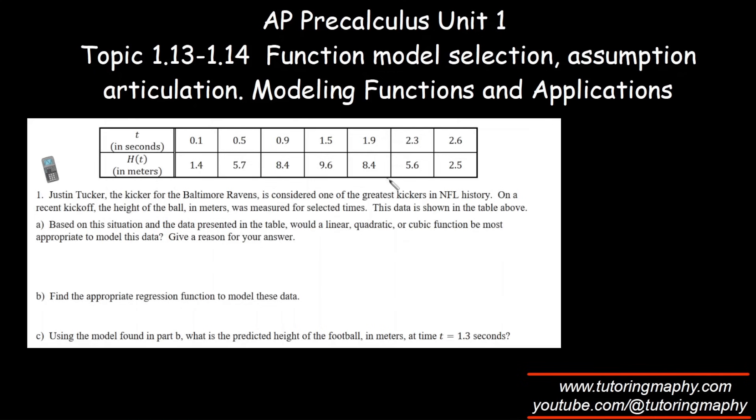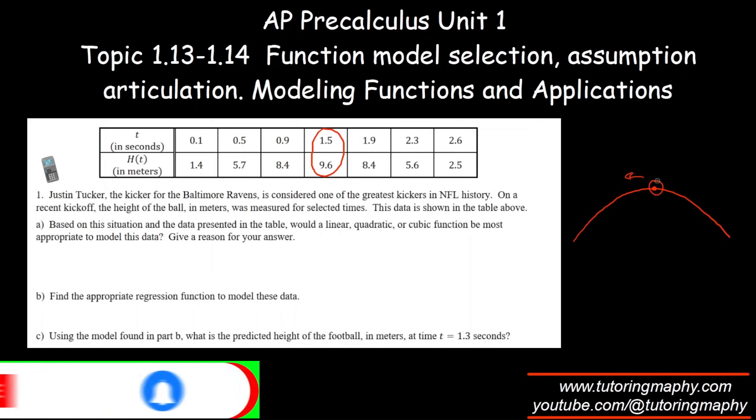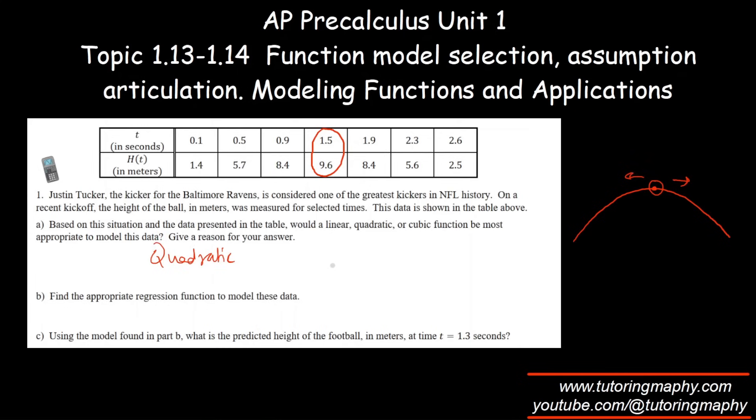We can see that obviously the time is increasing and initially the height is increasing from 1.4 to 9.6 and then it is coming down. Based on the situation and the data presented, would a linear, quadratic, or cubic model be appropriate? I think it should be quadratic. It makes perfect sense because when a ball is kicked, it follows a path like this, which is a parabola, which should max out at some level and then decrease. So a quadratic model seems the most appropriate choice.